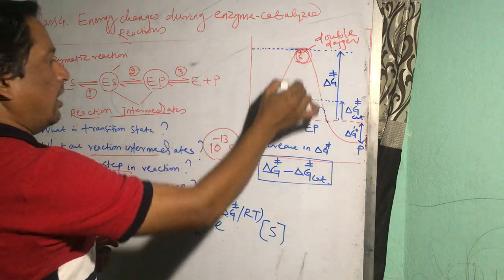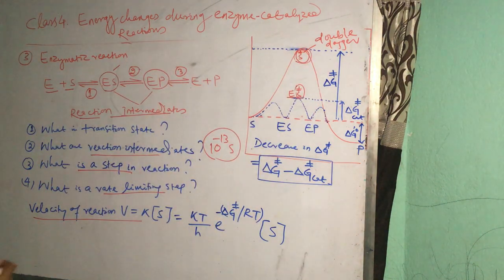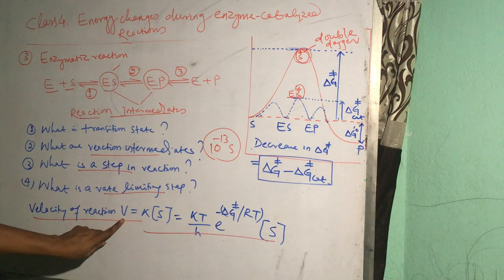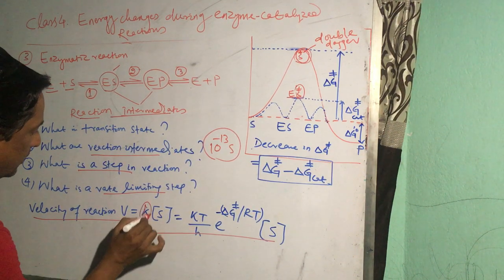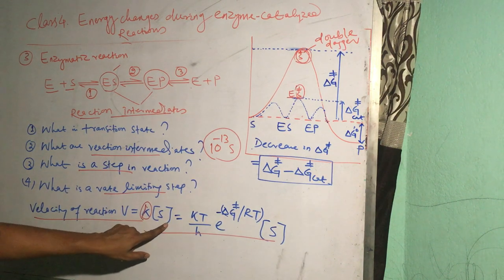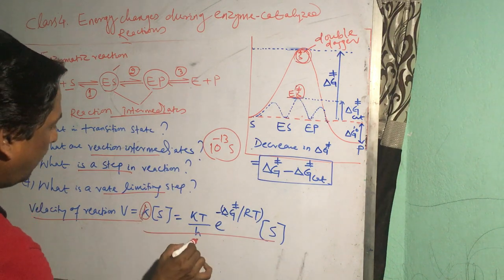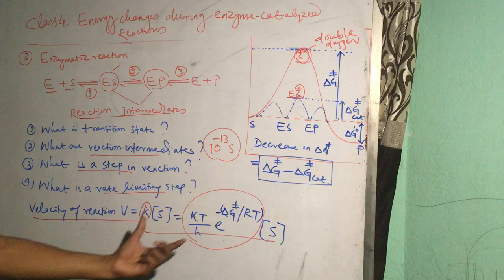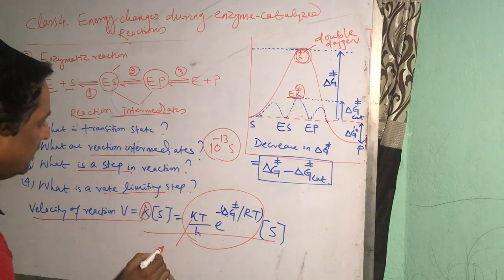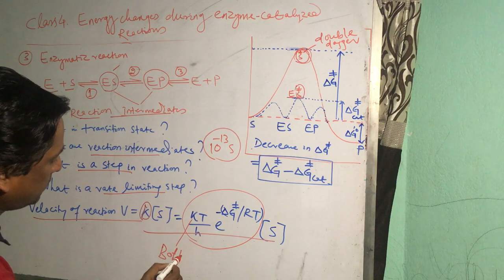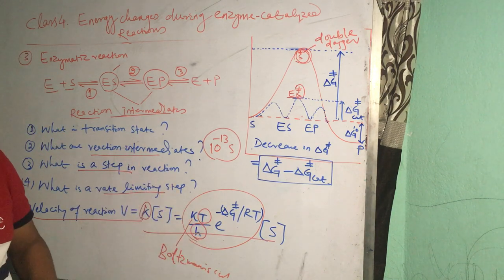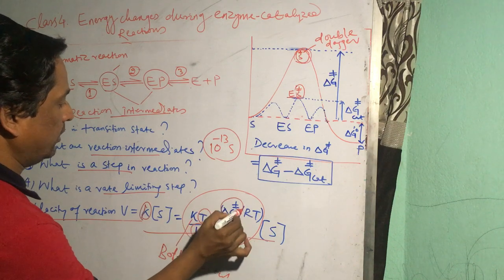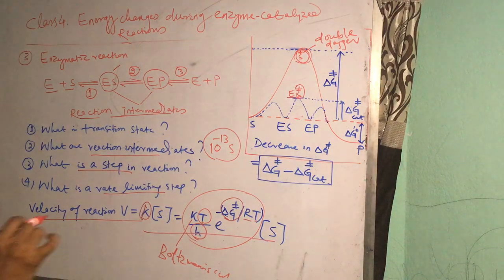So the rate of reaction is related to the energy barrier by this equation. The velocity V is equal to κ into S. κ is kappa, the Greek letter K, into the molar concentration of the substrate. This kappa is having this value. Here K is the Boltzmann constant, H is the Planck's constant, T is the absolute temperature. This is the activation energy, and R is the universal gas constant and T is again the absolute temperature.